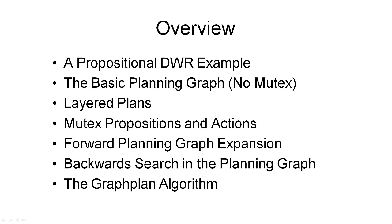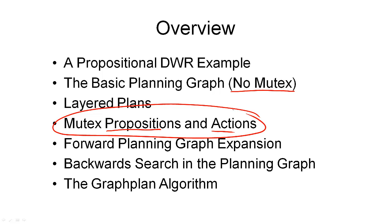Earlier, when we looked at the planning graph, I already mentioned that there is something missing in this graph. There are certain nodes missing and certain edges missing. That's what I said earlier — there were no mutex relations included. So what we will do now is look at these missing nodes and the missing edges which define mutual exclusivity between propositions and actions. That's what we'll be looking at next: the mutex relation between propositions and actions.